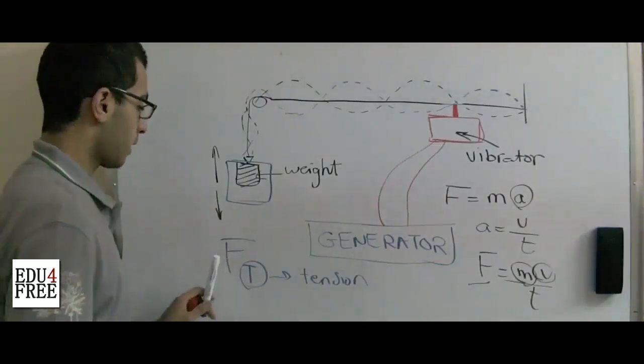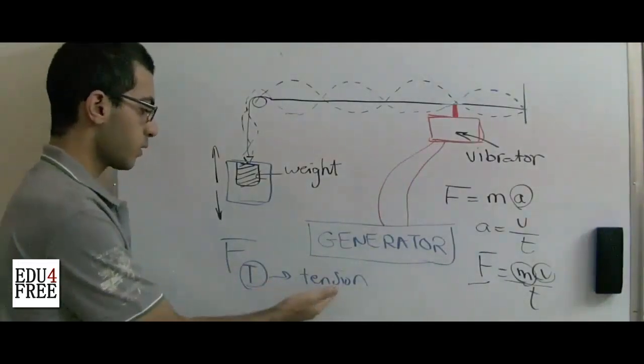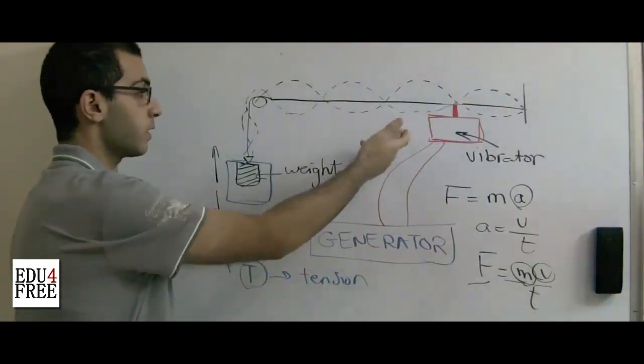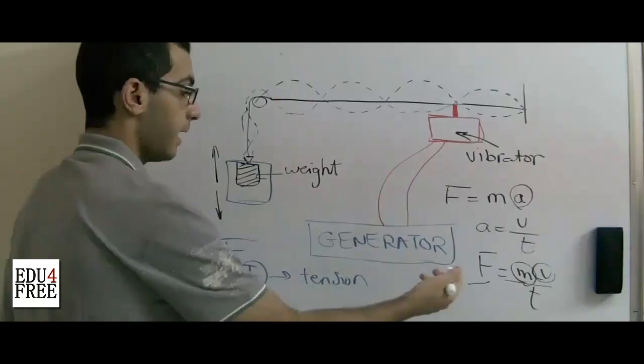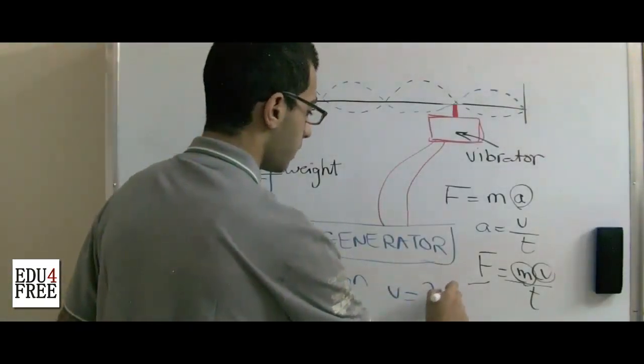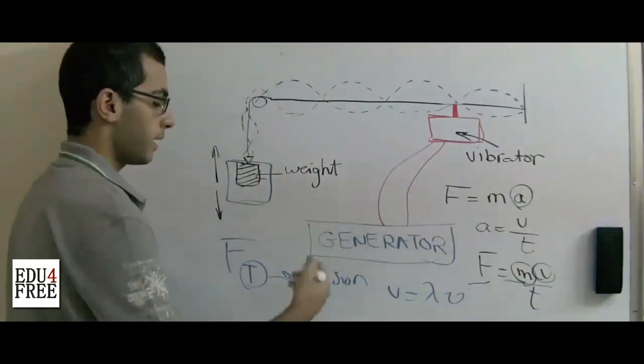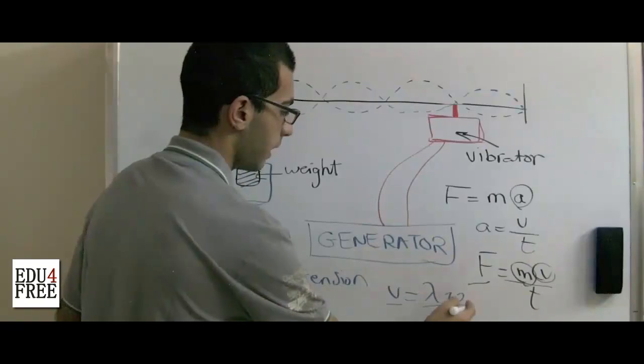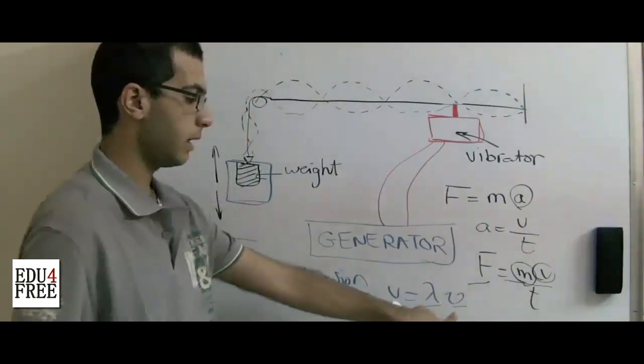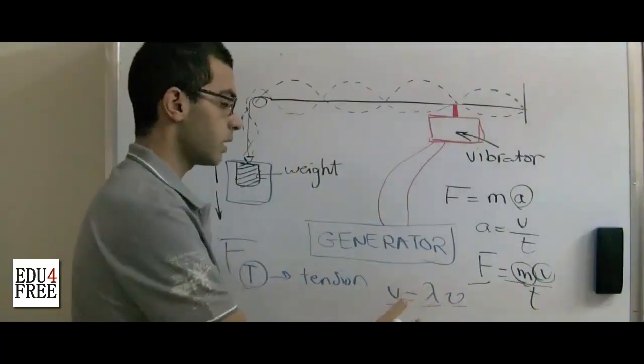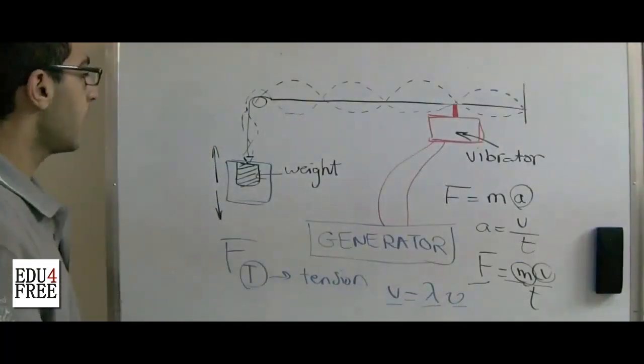And accordingly, when the velocity increases, as we know that velocity equals the wavelength multiplied by the frequency, velocity is directly proportional with the wavelength and directly proportional with the frequency. So all of these physical quantities increase.